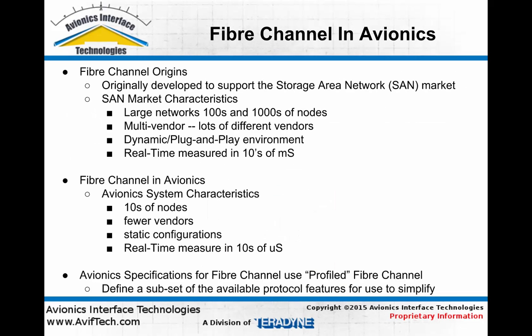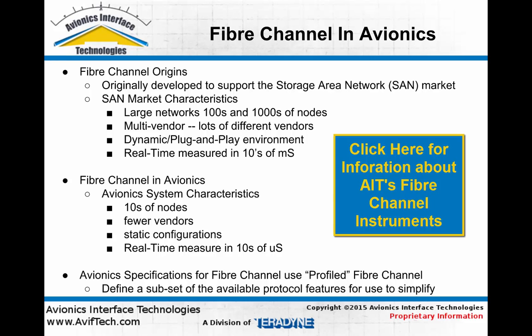Now let's talk about fiber channel as used in avionics systems. Fiber channel was originally developed to support the storage area network market. Typical SAN network characteristics include large networks with hundreds or even thousands of nodes, equipment from multiple vendors requiring high interoperability, dynamic plug-and-play environments, and real-time measured in tens of milliseconds.